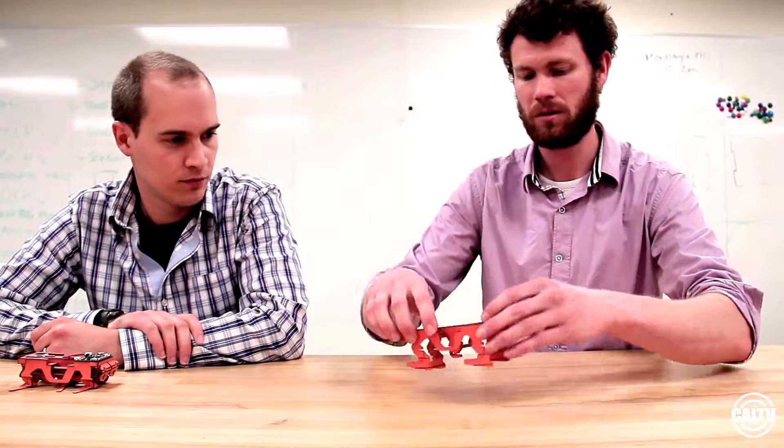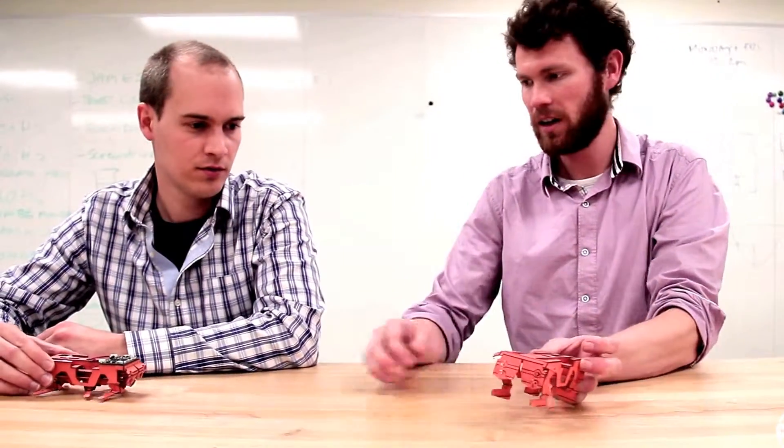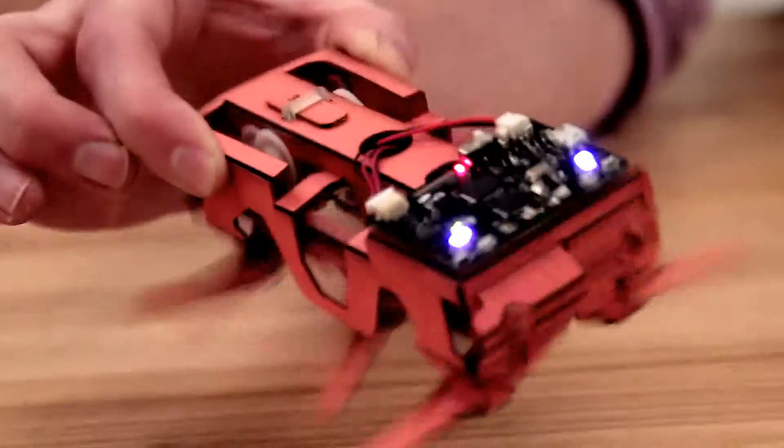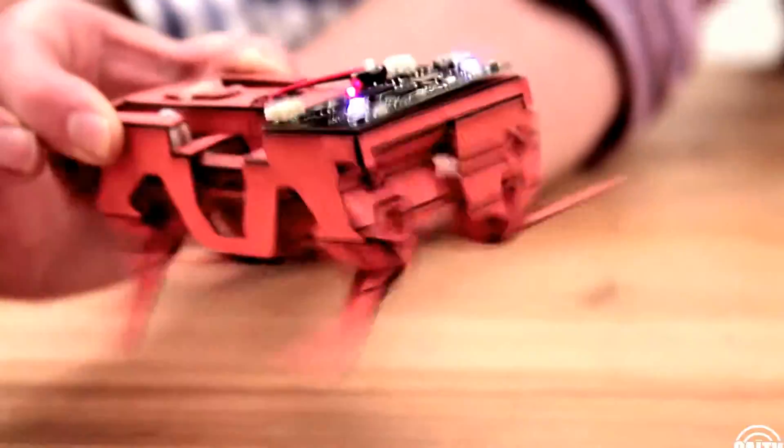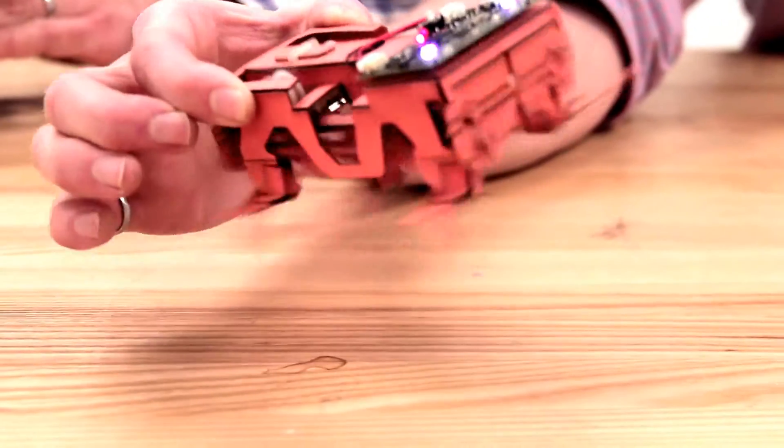If you think this robot looks like a cockroach, that's no coincidence. It was originally designed with the help of biologists here at Cal, and the way it runs, the stiffness of its legs, and the gait that it uses are all directly inspired by animals.